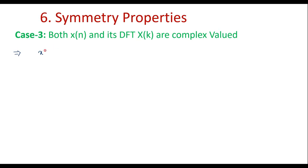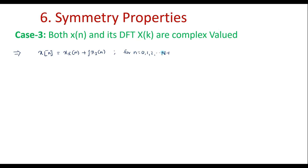Here we consider a discrete signal x(n) which is complex in nature, meaning it consists of a real part as well as an imaginary part. We can represent it as x(n) = x_R(n) + j·x_I(n), where R indicates the real part and I indicates the imaginary part, for n = 0, 1, 2, ..., N−1, considering an N-point DFT.